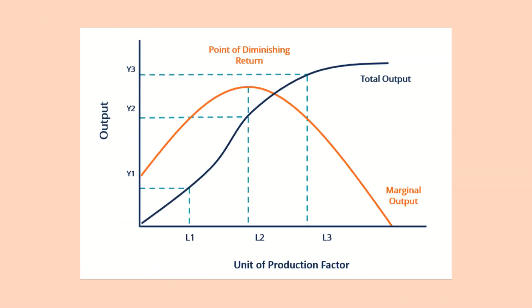Let's take a quick look at the graph depicting the law of diminishing marginal returns. The blue line represents total output or total product, which is always increasing — it will eventually level out and hasn't decreased yet in our scenario. The orange line represents the marginal output or marginal product: it initially increases, but once it reaches its peak point, it starts to decrease. That peak point corresponds to the addition of Adam in our scenario.